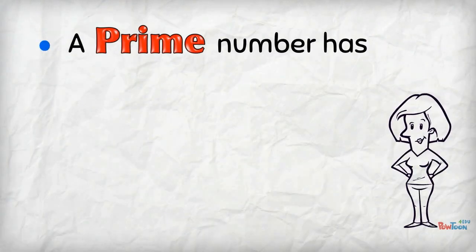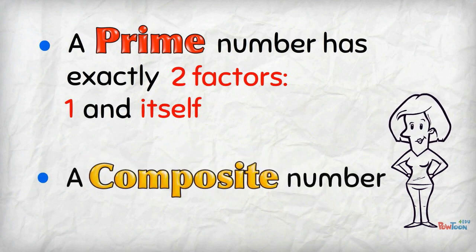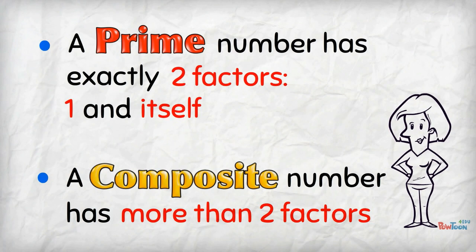Remember, a prime number has exactly 2 factors: 1 and the number itself. And a composite number has more than 2 factors.